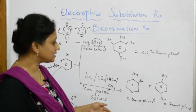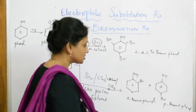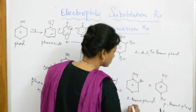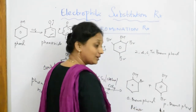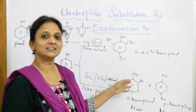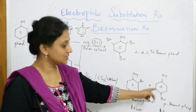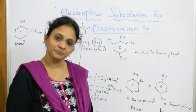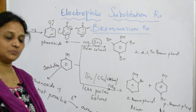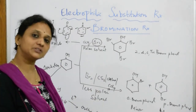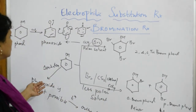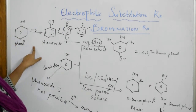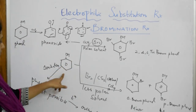So what is the major product here? Para is the major product and ortho is the minor product. Why is ortho the minor product? Because steric hindrance at the ortho position is more compared to the para position, which is more open and symmetrical. Therefore, para is more preferred than orthobromophenol. This may be asked as a question in exams.